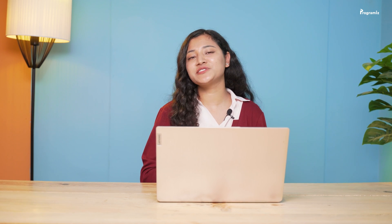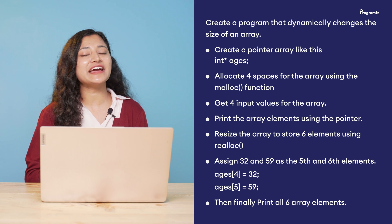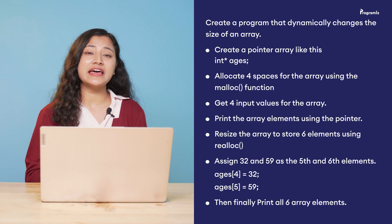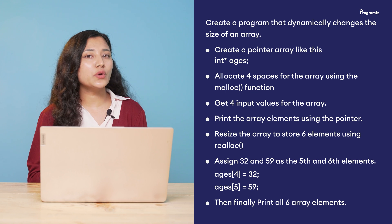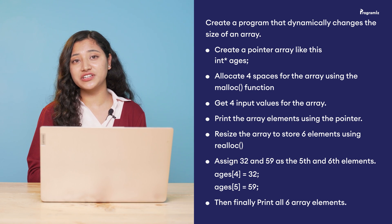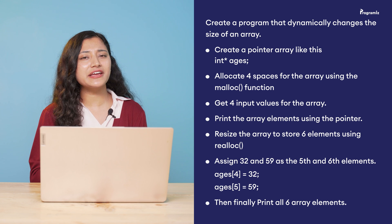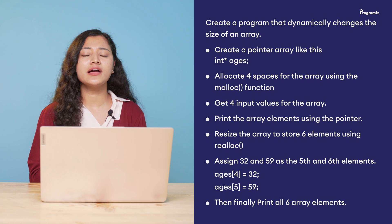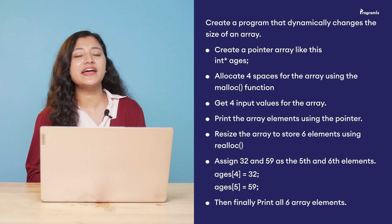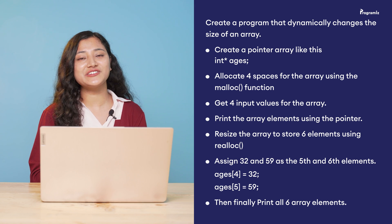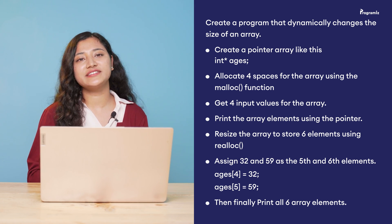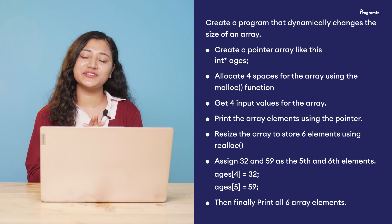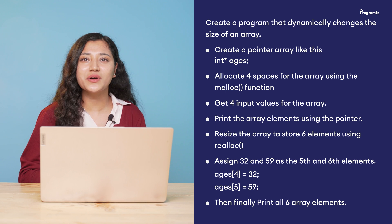Now to revise what you have learned, here is a programming task for you: Create a program that dynamically changes the size of an array. Create a pointer array like int asterisk ages, then allocate 4 spaces using malloc, get 4 input values, print the array elements using the pointer, resize the array to store 6 elements using realloc, assign 32 and 59 as the 5th and 6th elements, then print all 6 array elements. You will find the answer in our GitHub repository — I'll put the link in the video description below.